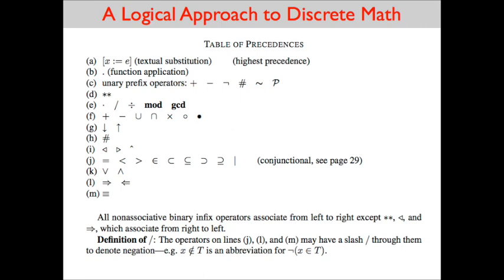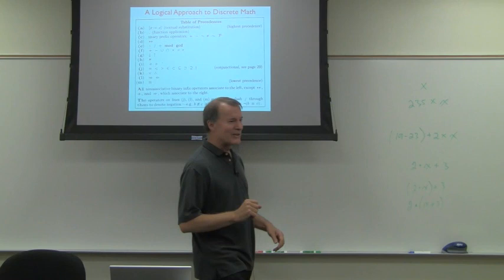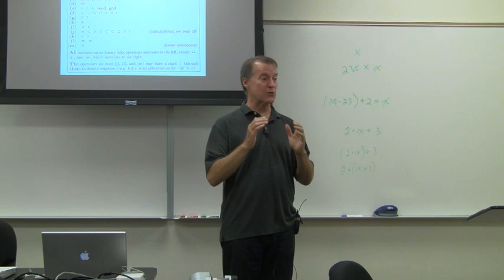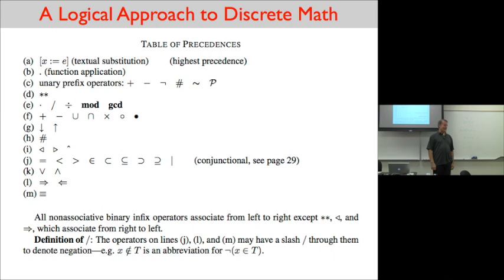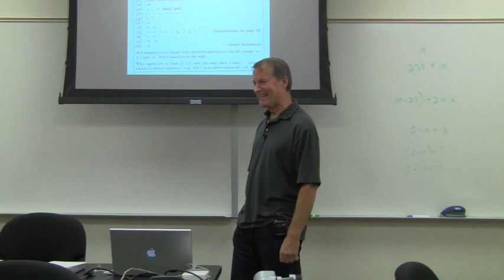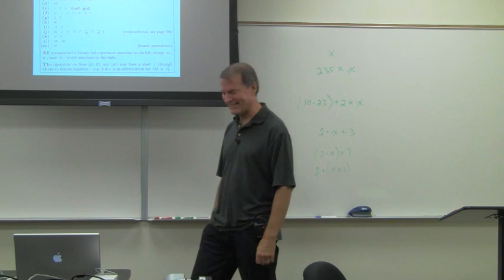Where are parentheses on the precedence chart? The rule is: you can put parentheses around any expression, and that automatically changes the precedence — what's in the parentheses happens first. Technically parentheses have the highest place on the chart. Maybe we should put a level above A for parens. But it's neither infix nor prefix, so it answers its own question. This is going to be a great class.